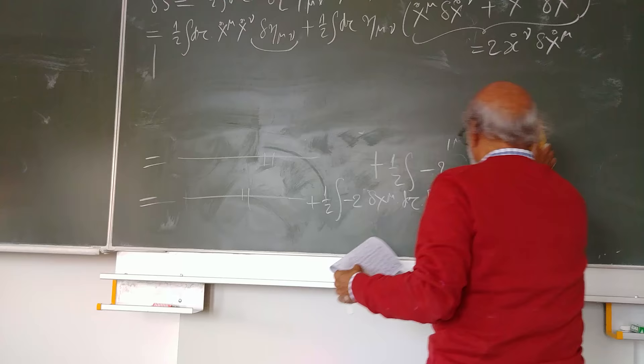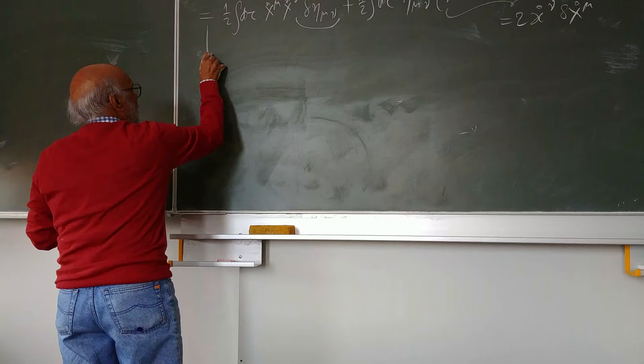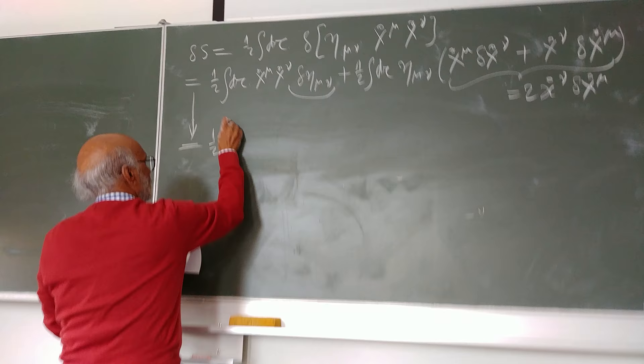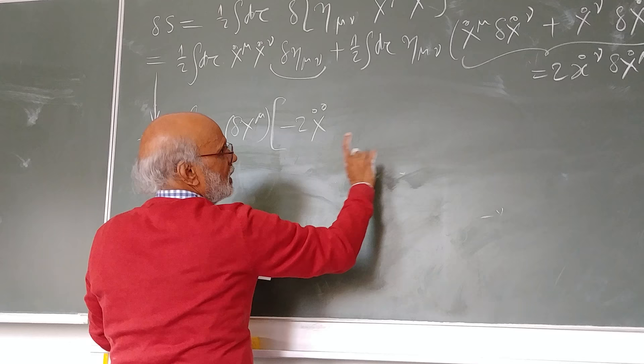And let me collect all the terms for delta s. So now I get as follows: one half d tau delta x mu times there is one term with x double dot.